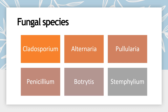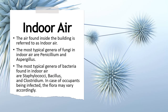Examples of fungal species that can be found in the air include Cladosporium, Alternaria, Pullularia, Penicillium, Botrytis, and Stemphylium. The air found inside a building is referred to as indoor air. The most typical genera of fungi in indoor air include Penicillium and Aspergillus, while the most typical genera of bacteria found in indoor air include Staphylococci, Bacillus, and Clostridium.